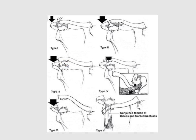Type 4 is a rare type of acromioclavicular joint injury. It will have total tearing of the acromioclavicular ligament and the coracoclavicular ligament, and will also have a posterior displacement of the clavicle. As we can see here, the clavicle is posterior to the acromial process of the scapula, which is not the case in normal people.